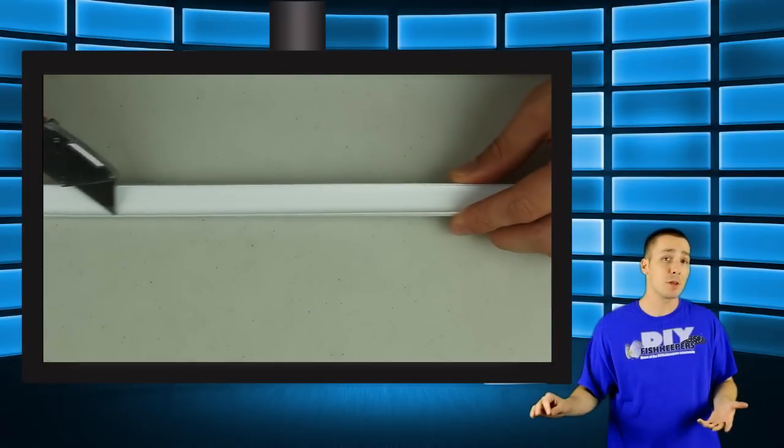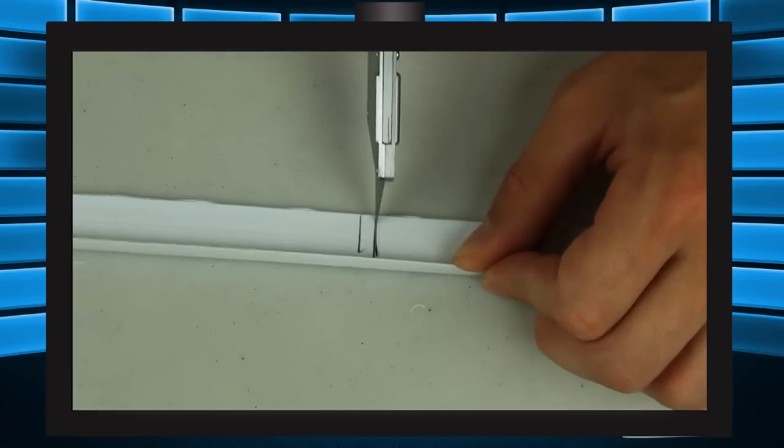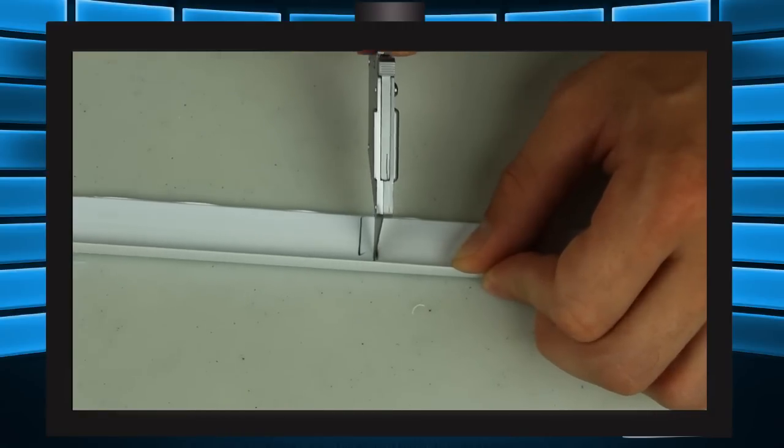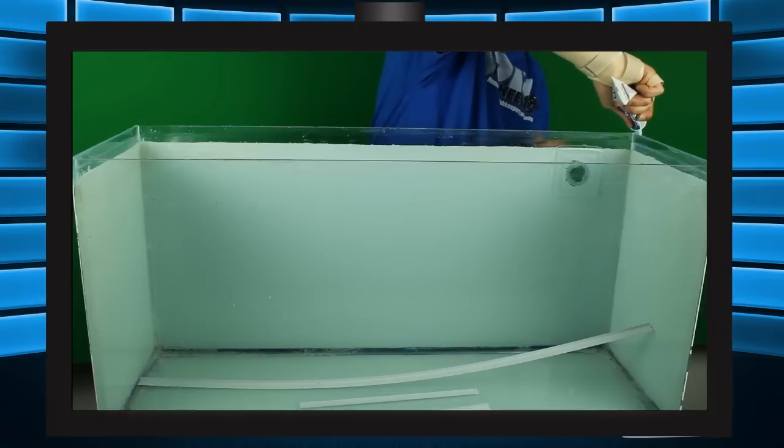With a razor, I etched one of them along the edging and snapped it off. I then cut it to the required length and siliconed it on top of the aquarium.